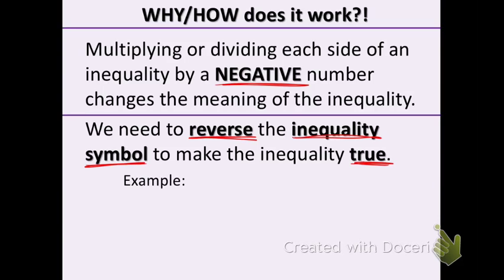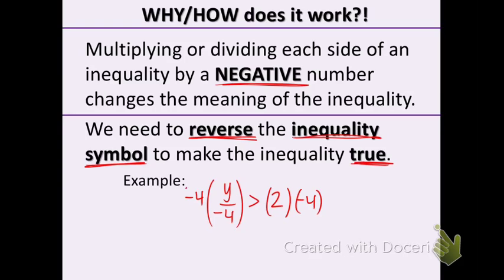An example of this would be y over negative 4 is greater than 2. To get rid of the negative 4 on the bottom, we multiply both sides by negative 4. When you do that, those cancel, the symbol has to switch, and you get negative 8. So that's how the symbol flip works when multiplying by a negative number.